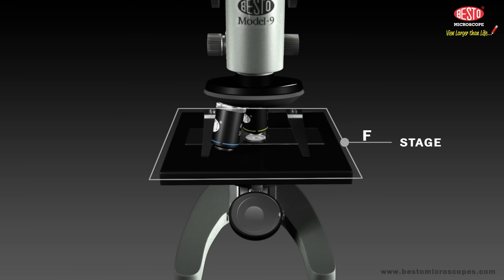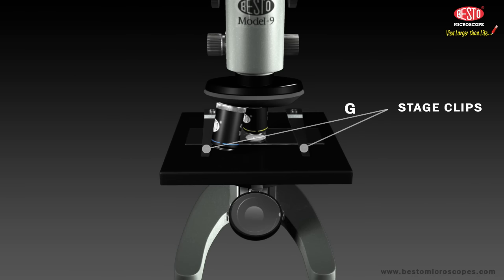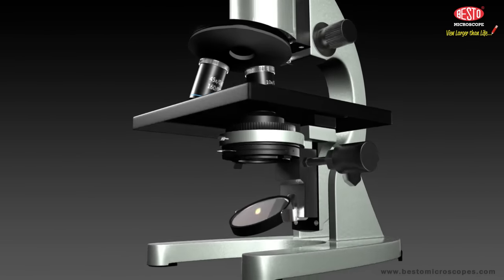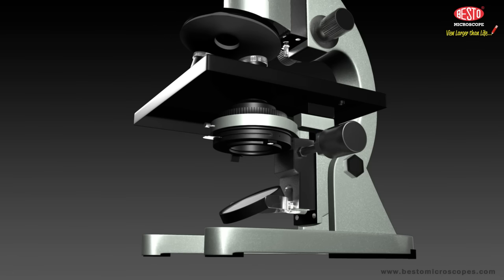G. The stage clips hold the slide in place on the stage. H. Beneath the stage, all Besto microscopes have a condenser having standard diameter of 39.5 millimeter, which collects and concentrates the light before it passes through the sample.